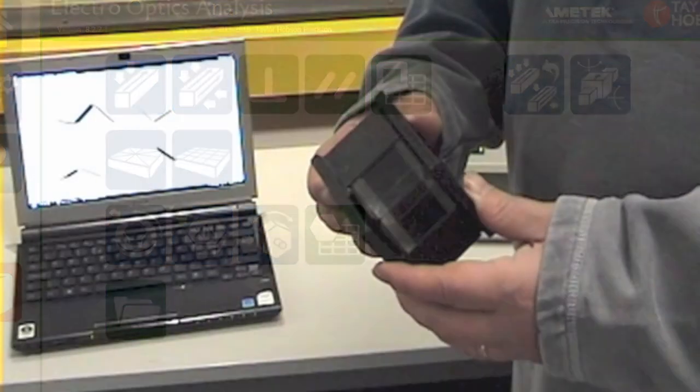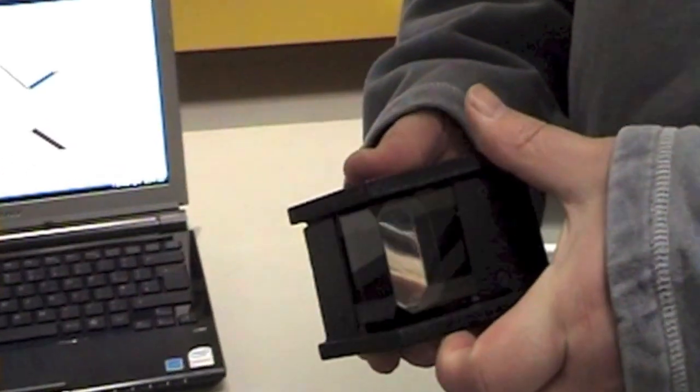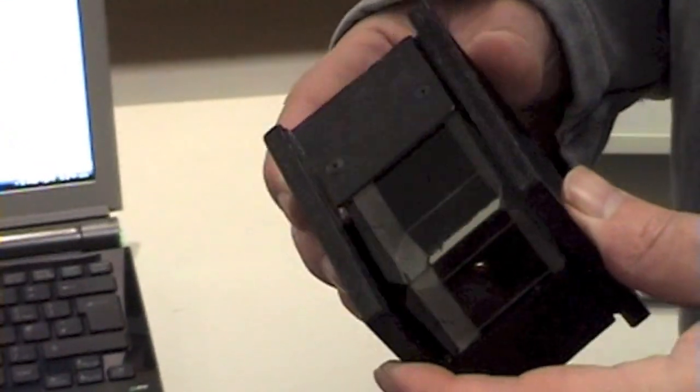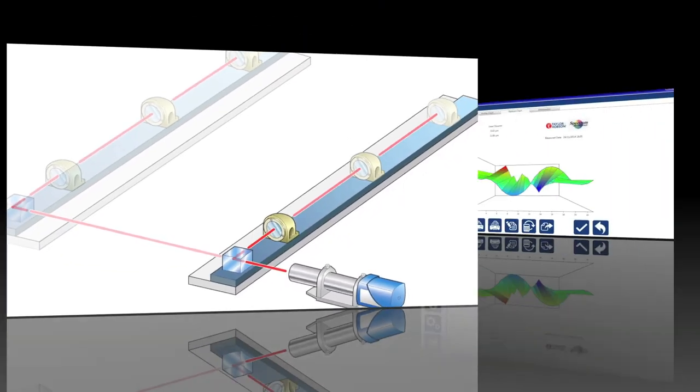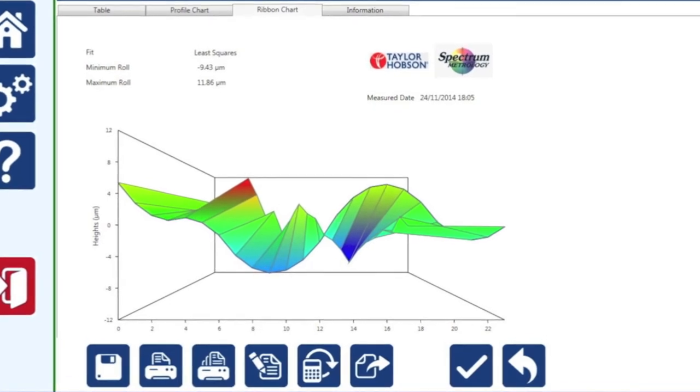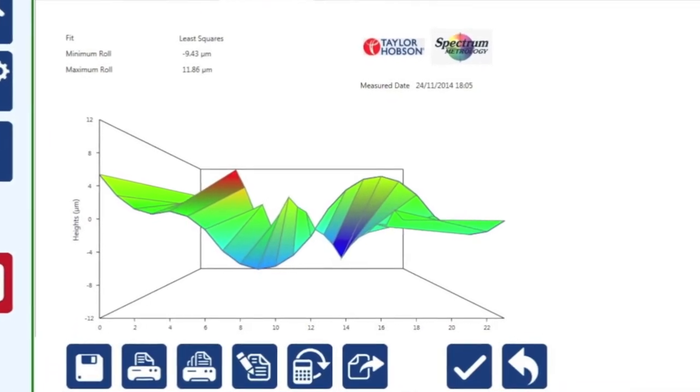With the addition of an optical square, you can measure squareness and also parallelism, twist or roll.